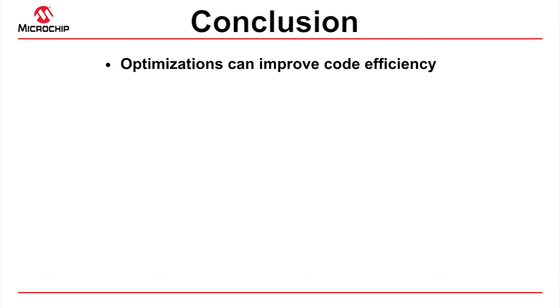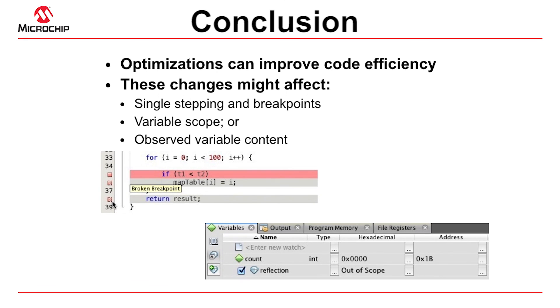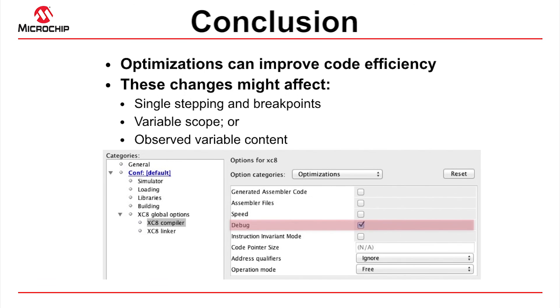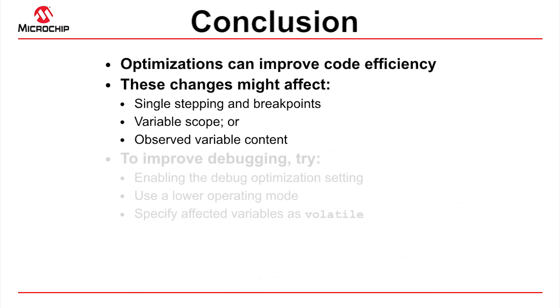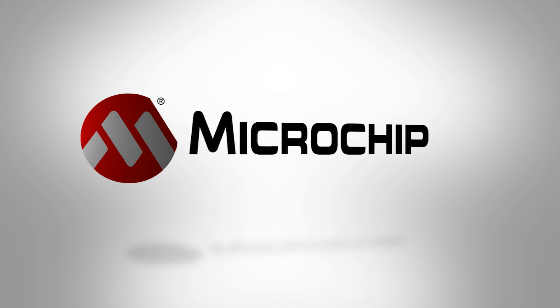C compilers are able to alter their generated output as long as it does not change any observable behaviour of your program. The MPLAB XC8 C compiler optimizations shown in the previous slides are just some of the ways this can be done. If you are experiencing difficulty stepping through code, setting breakpoints, or variables are marked as out of scope or shown to have the wrong value in the watch view, there are a number of things you can try. First, enable the Debug optimization setting. If this has no effect, try using a lower compiler operating mode, or specifying variables in the statement you are trying to analyse as volatile. In most instances, these steps allow you to build and debug your code successfully.